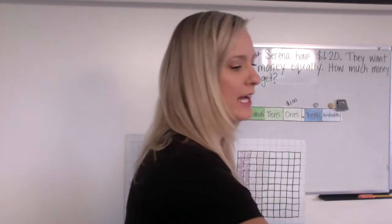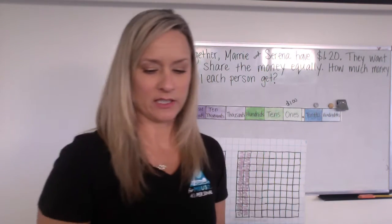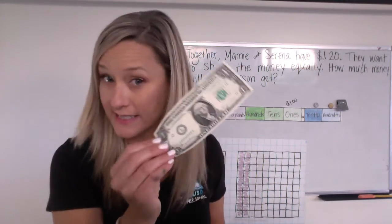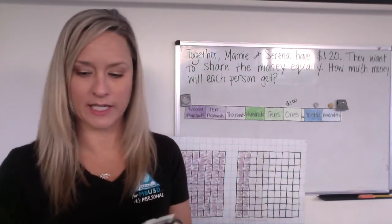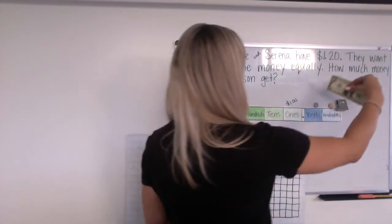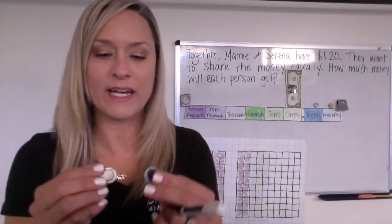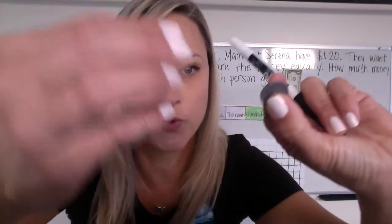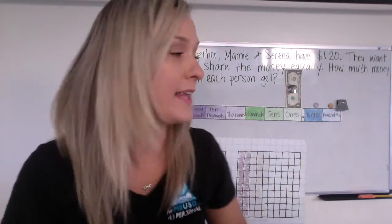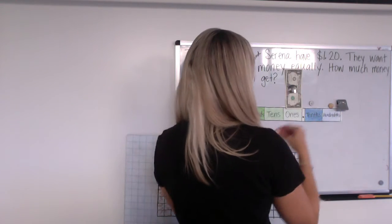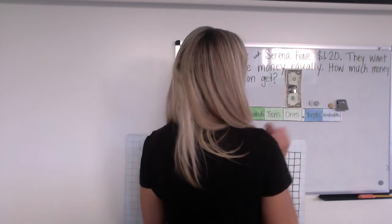Alright, so let's think about that. What does it actually look like with money? So we've got our fancy schmancy real $1 bill again, right? So they have a dollar bill. We can even put it right there. And then they have 20 cents. So they've got two dimes and they want to share it equally. We'll just put it like that.